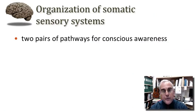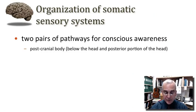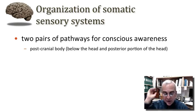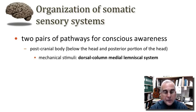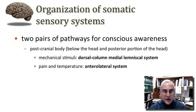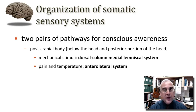Let me introduce again the pathways, and then we'll look at them one at a time. For our conscious awareness of mechanosensory stimuli, there are two pairs of pathways — one for the body below the back of the head, including the back of the head, which we call the postcranial body. There is a pathway called the dorsal column medial lemniscal system, with elements of the dorsal columns of the spinal cord and the medial lemniscus. There's also a pathway that mediates pain and temperature for the postcranial body, called the anterolateral system.